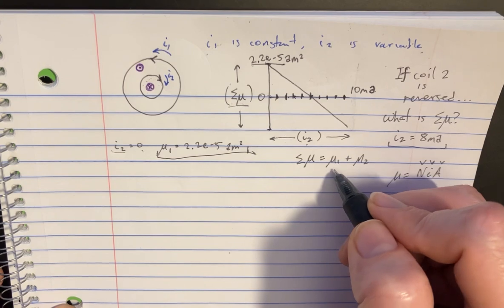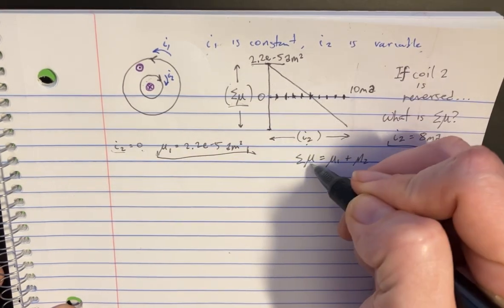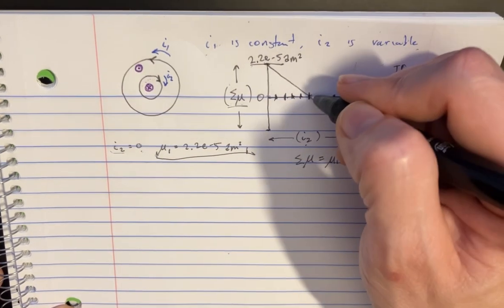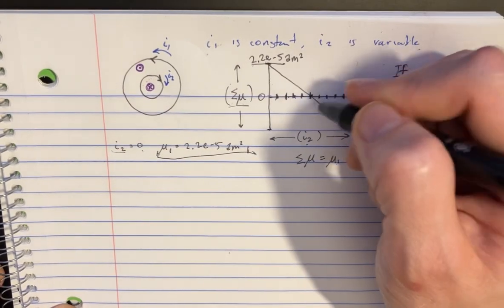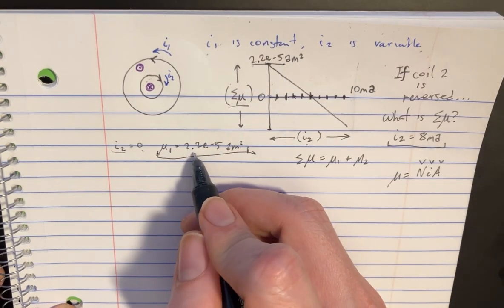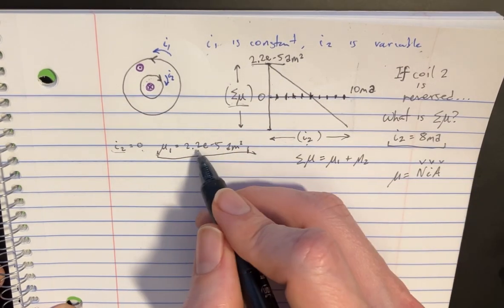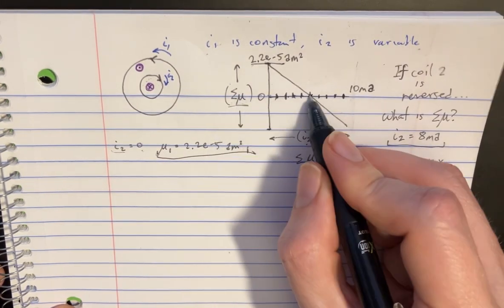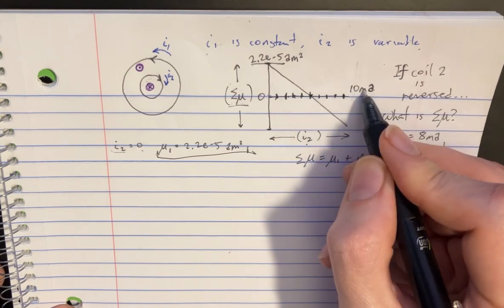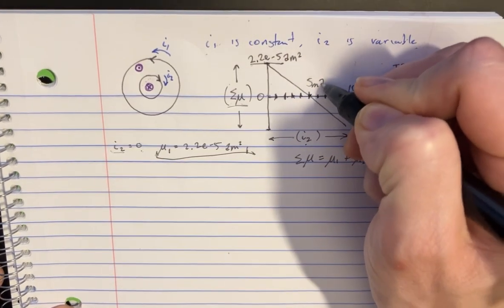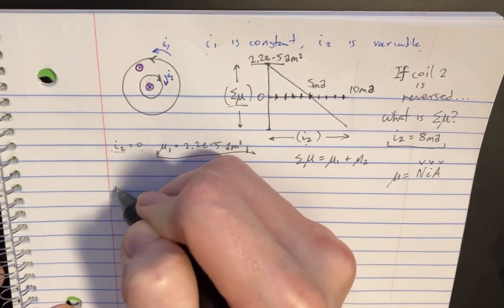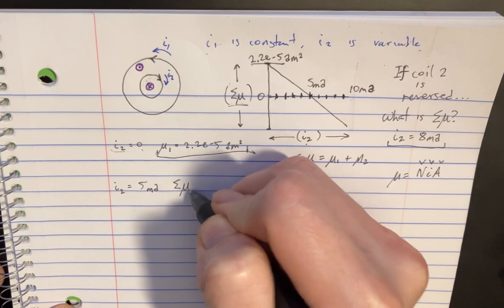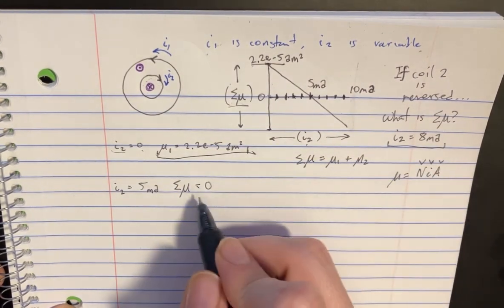Another really important number that we want to look at is when the net is equal to zero. So we've already established that M1 is this. And if we figure out what it would be equal to zero, then we would see that I2 would be the minus of that. Right here, for the net is equal to zero, notice that I2 is at five milliamps. So when I2 is five milliamps, the net M is equal to zero.